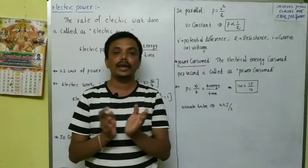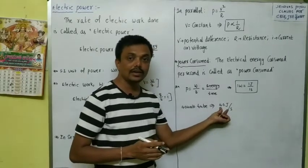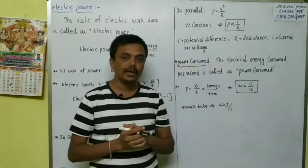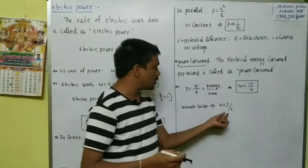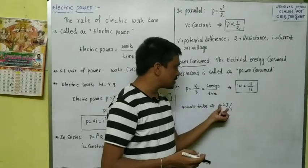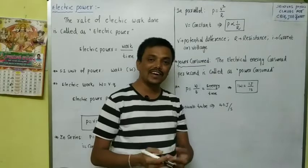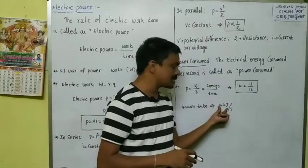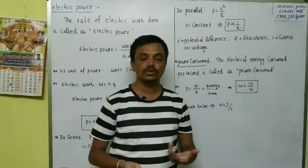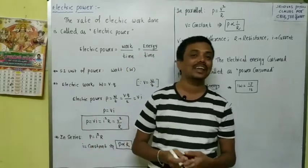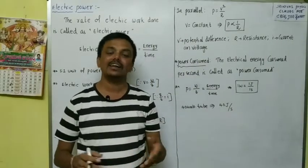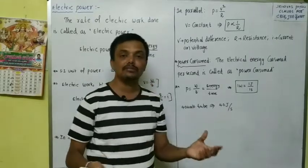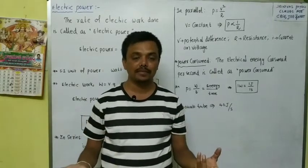That 40 watt tube means the tube can consume 40 joules of energy for every second. If you use that tube for one hour, then in one second it consumes 40 joules. In one hour there are 3600 seconds, so we can calculate the energy consumed by the tube in one hour or any time duration, like one day. Power is energy consumed per second or energy supplied per second.